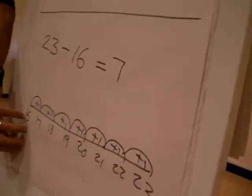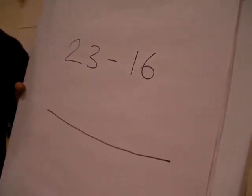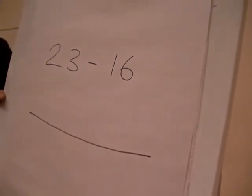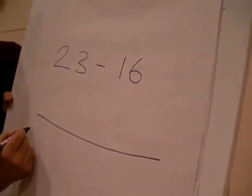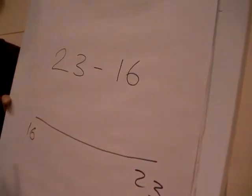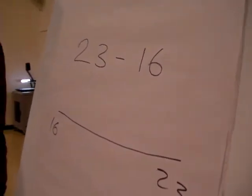So for example, 23 take away 16 on a number line would look like this for some children maybe in the top end of year 2 and those children that are going into year 3. So we've got 16, 23 and they go, well I know 16, if I add 4 onto 16 that takes me to 20.